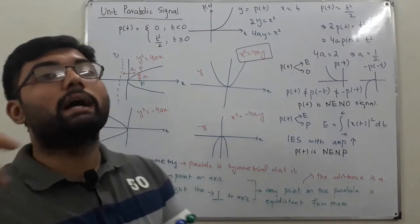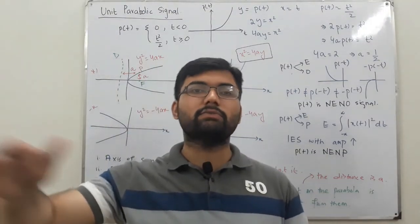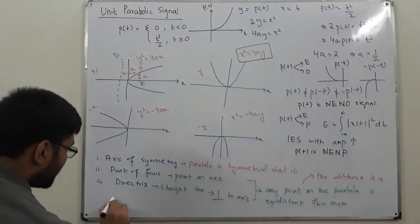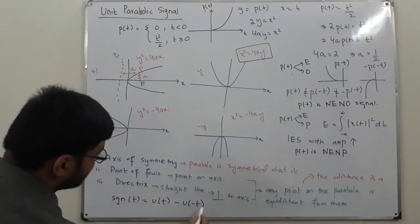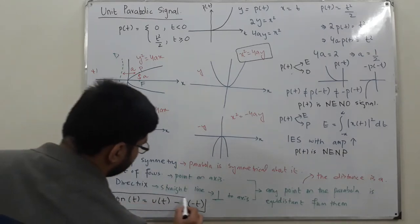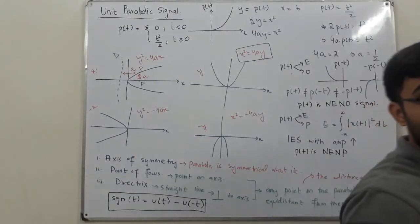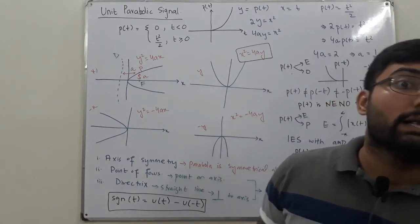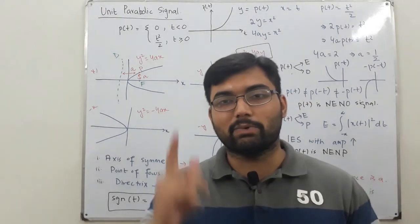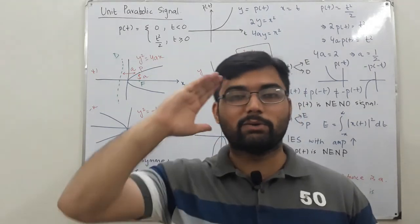That's all about the unit parabolic signal. I believe I missed a point in the signum function: it is 1 for positive values of time and −1 for negative values of time, so the signum function can be written as U(T) minus U(−T). That's all about the basic signals. I'll see you in the next lecture on the most awaited topic — systems. Till then, take care of yourselves and everyone around you. Goodbye.